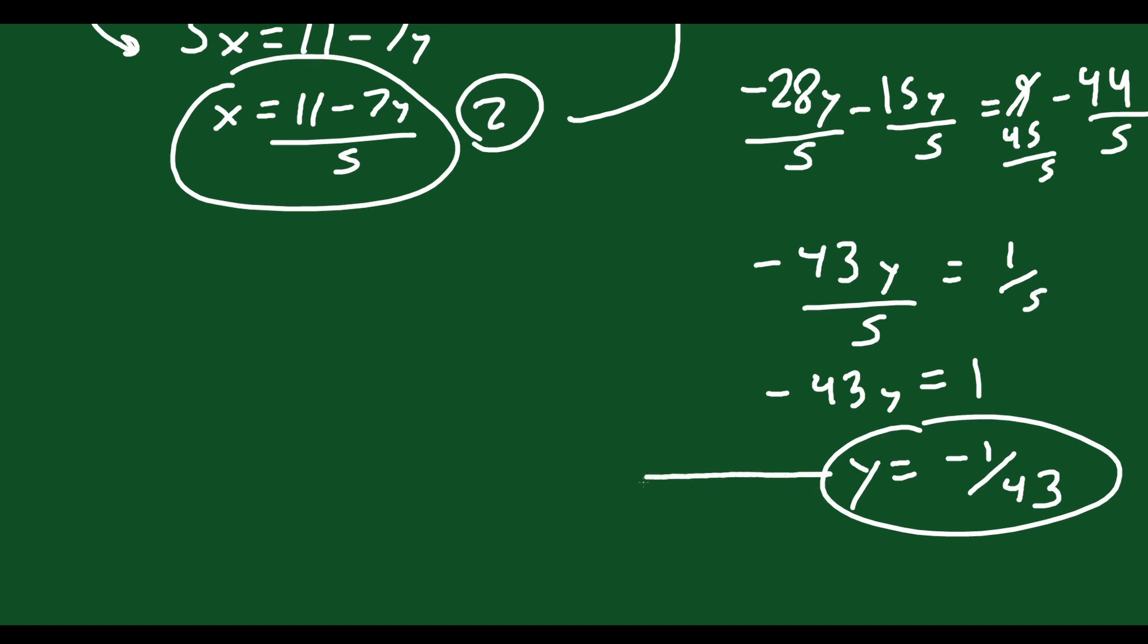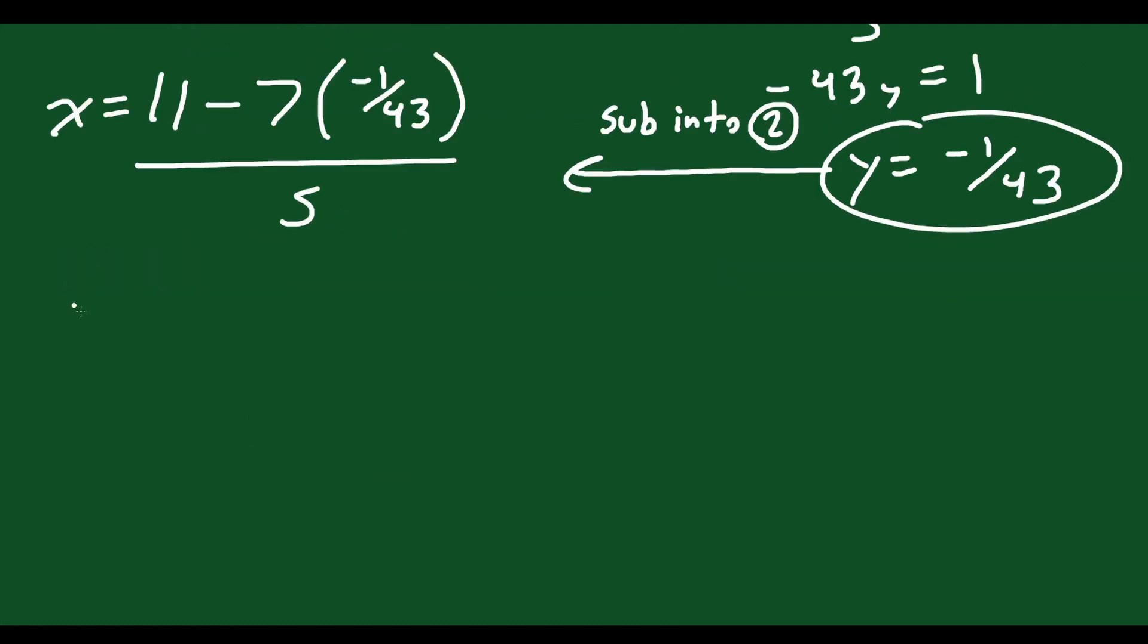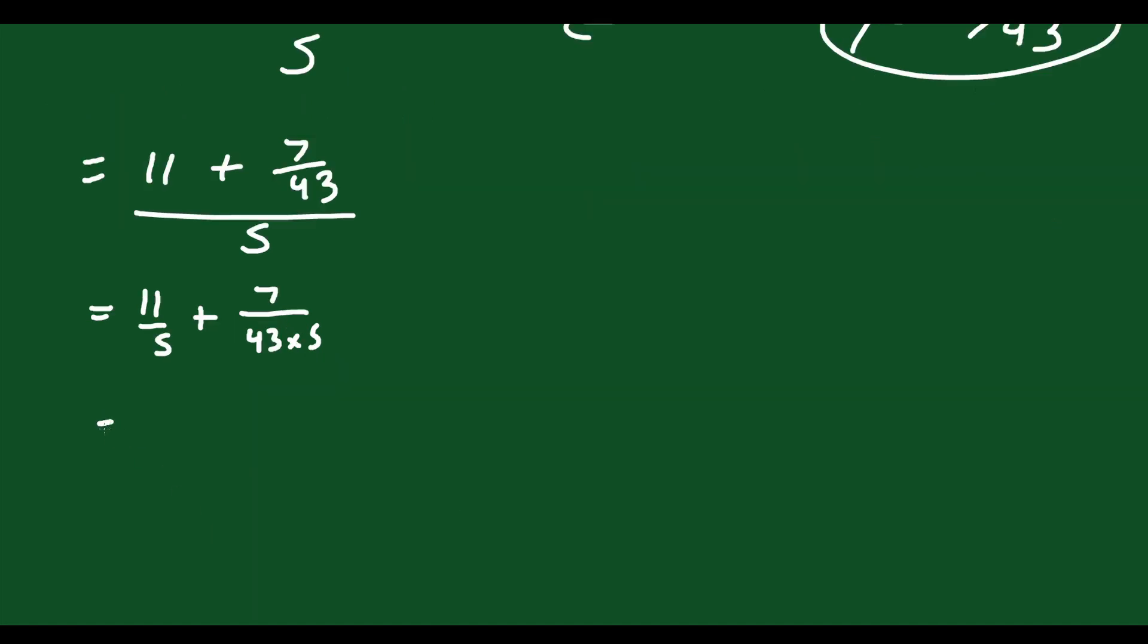You can then sub this answer into this here. So I'm going to sub in to equation 2. So sub this answer into equation 2 up here because that's already defined for x. So x is equal to 11 minus 7y. But instead of y, I put the answer for y. So negative 1 over 43 all over 5. And then you calculate this. So what is that? You get 11 plus 7 over 43 all over 5. All that is is 11 over 5 plus 7 over 43 times 5. So you can split that up, that fraction like that. And there's different ways to do this, right? We're just going to simplify it manually like this.